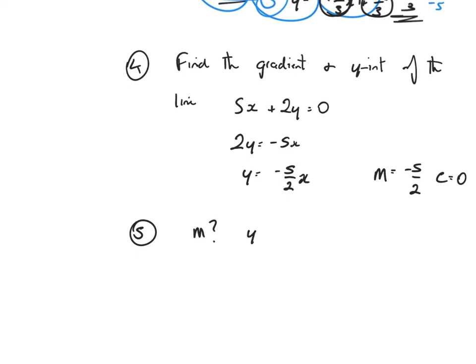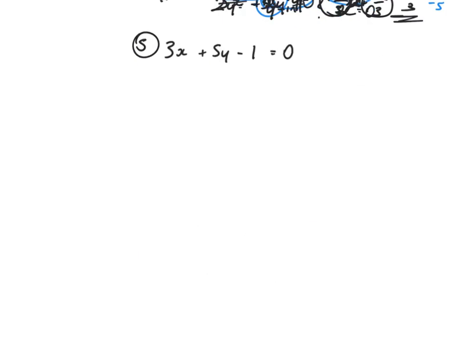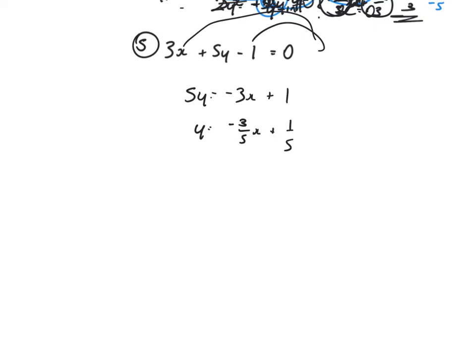Example 5: find the gradient and the y-intercept given 3x plus 5y minus 1 equals 0. Rearrange to y equals mx plus c by moving 3x and −1 across: 5y equals −3x plus 1. It could be tempting to say gradient is −3 and y-intercept is 1, but it's not yet in y equals form — divide both sides by 5. So y equals −3/5 x plus 1/5. Therefore m equals −3/5 and c equals 1/5.